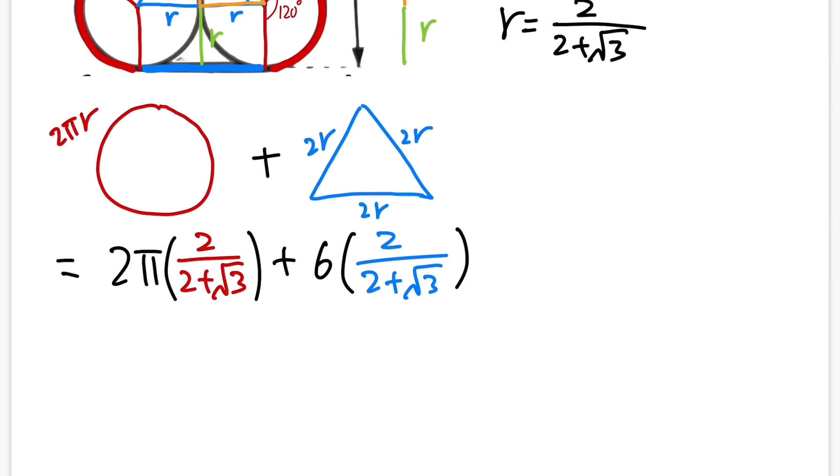All right, the answer for this question doesn't look so nice, but at least we have the same denominator right here. So let's just go ahead and put this down as (2 plus √3) on the bottom, and for the top right here, 2 times 2 we get 4π, and then we add 6 times 2 we get 12. So that will be an answer for it.